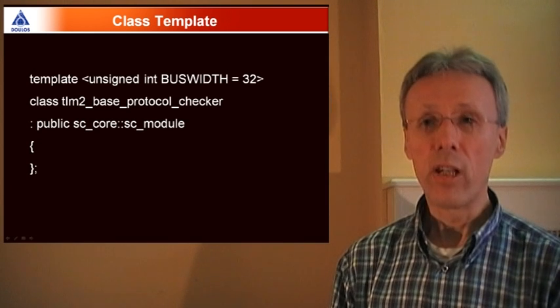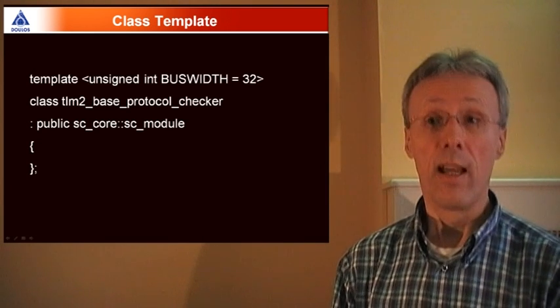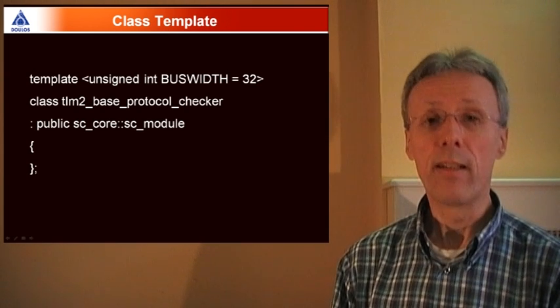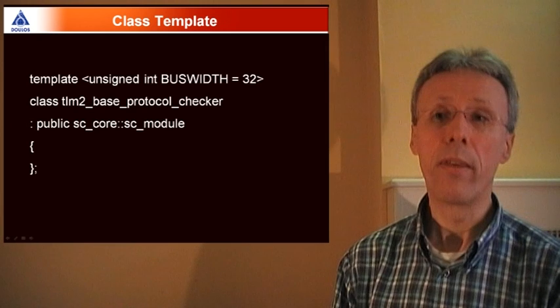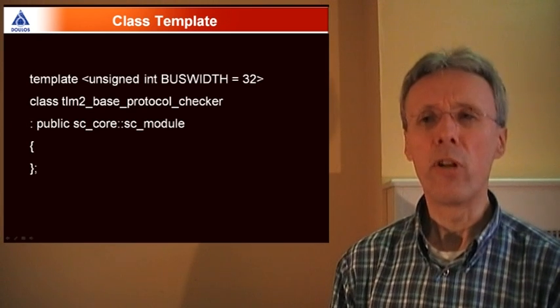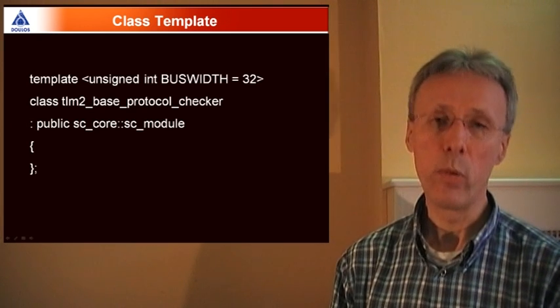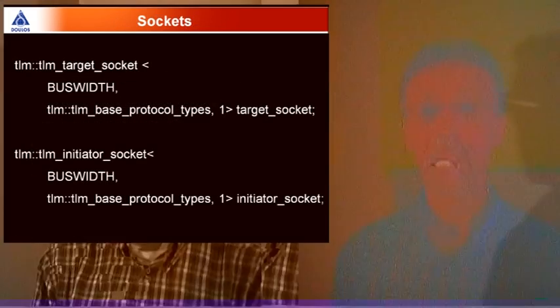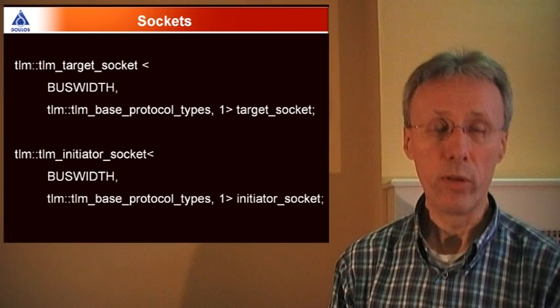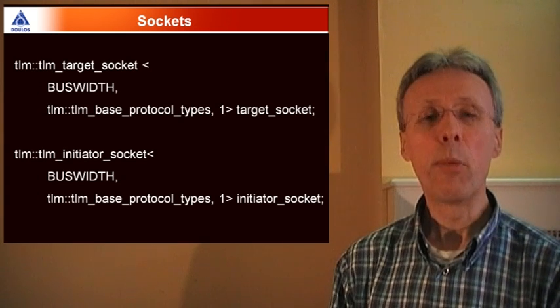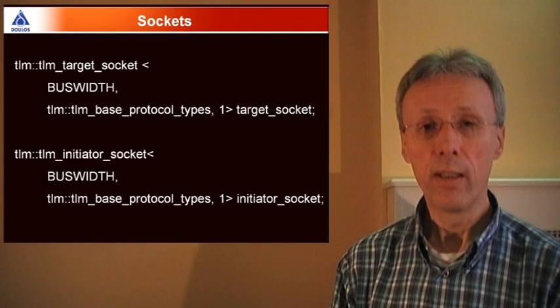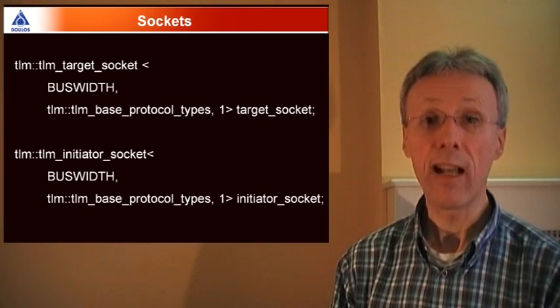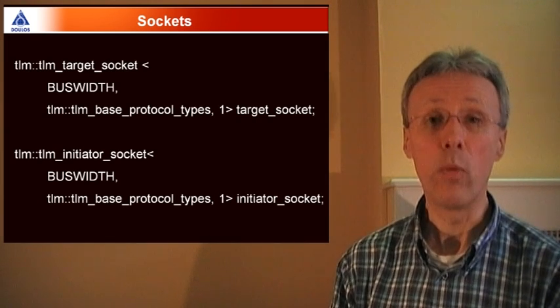The checker is actually a C++ class and that class is also a SystemC module. It's a class template. The template parameter is the bus width. So a socket within the protocol checker can only be bound to a TLM 2.0 socket of the correct width. The sockets within the checker are not multiports. The maximum number of bindings on each of the sockets is set to one. That means you bind the protocol checker in line between exactly one initiator port and exactly one target port.